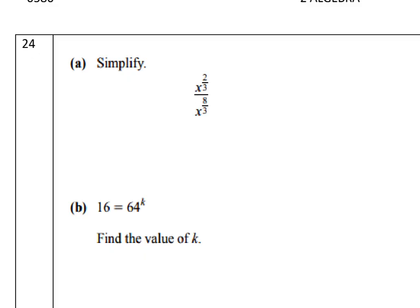Problem 24b: x^(2/3) divided by x^(8/3). Subtract the powers: 2/3 minus 8/3 equals −6/3 = −2. So the result is x^(−2), which can be written as 1 over x^2.